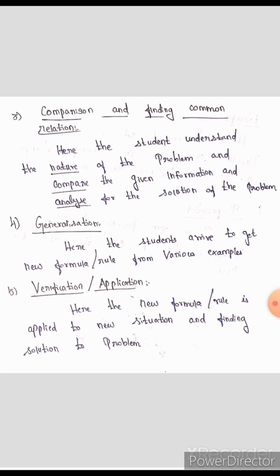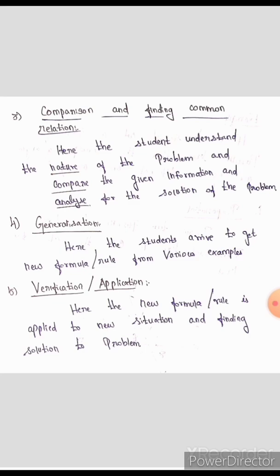Step 4 is Generalization. Here the students arrive at a new formula. In order to analyze the problem, the problem will be used as a new formula — this is generalization. After that, Step 5 is Verification. There is a problem applied to the problem. The new formula or rule is applied to a new situation to find the solution.